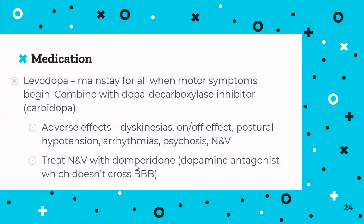Treatment is symptomatic, not curative. The mainstay is levodopa, started once motor symptoms significantly affect the patient. It must be combined with a dopa decarboxylase inhibitor — carbidopa primarily, or benserazide — which reduces peripheral adverse effects and prevents the artificial dopamine from being broken down in the periphery before crossing the blood-brain barrier.